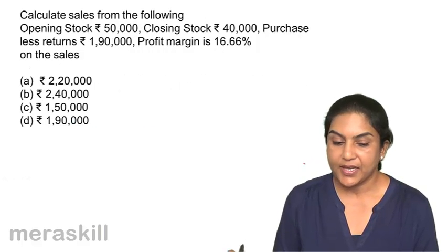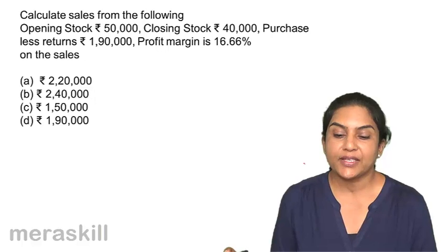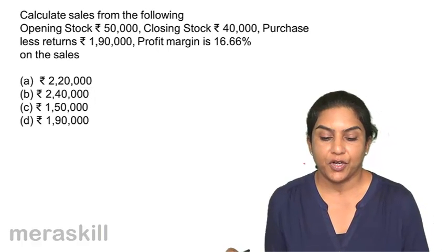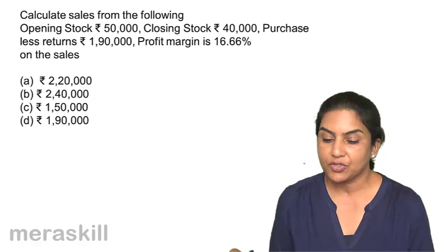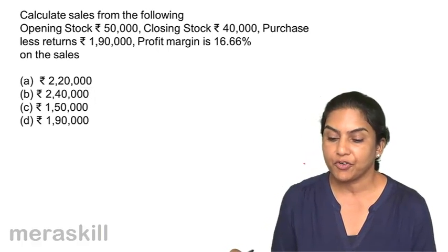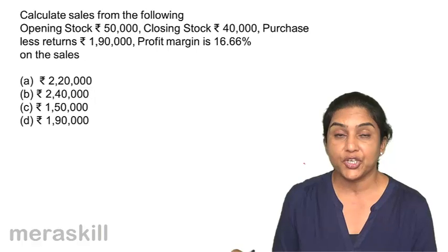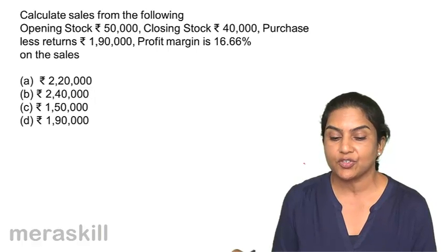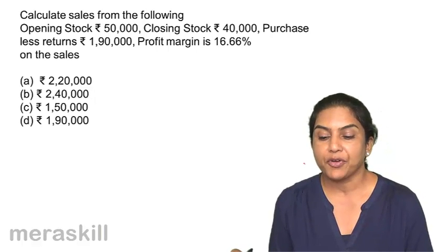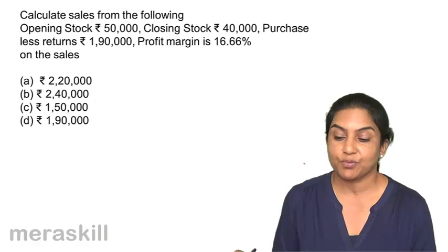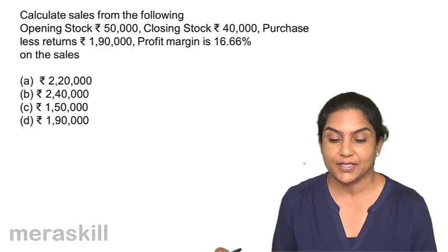The next one says: calculate sales from the following — opening stock 50,000, closing stock 40,000, purchases less returns 1,90,000, profit margin is 16.66% on sales.